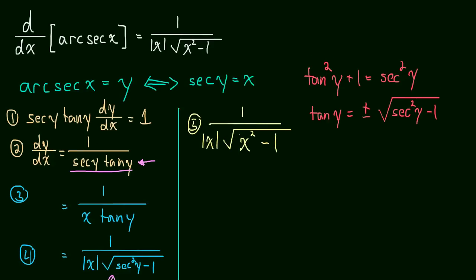Okay, I also wanted to mention, you may have seen or had an inkling of this, but you could get the exact same result by using a different identity, which is arc secant of x is the same thing as the arc cosine of 1 over x.